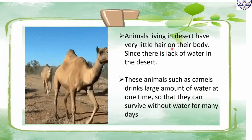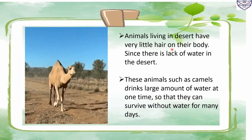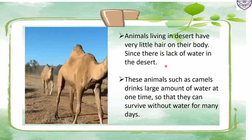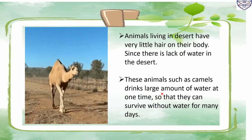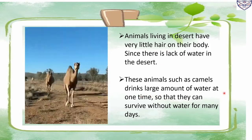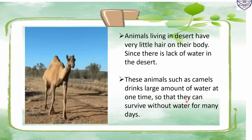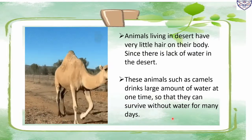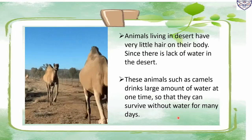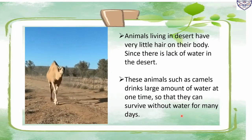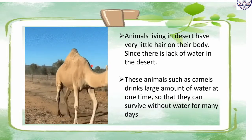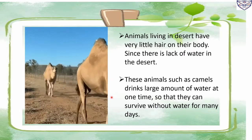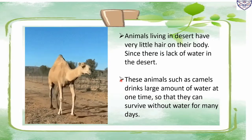Animals living in deserts have very little hair on their body. Since there is a lack of water in the desert, animals such as camels drink large amounts of water at one time so that they can survive without water for many days. Slowing down of activity or settling into a long sleep during hot summer months is called estivation. Thus, animals have adapted to live in different climatic conditions.